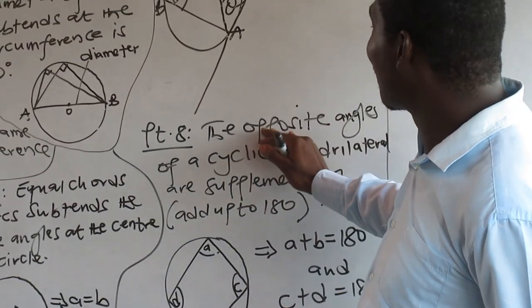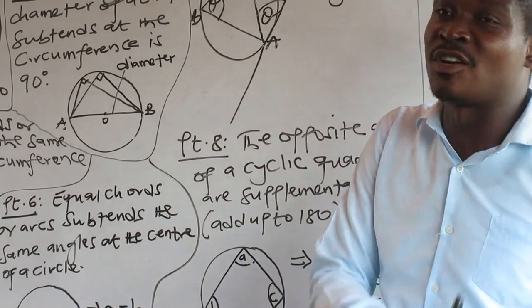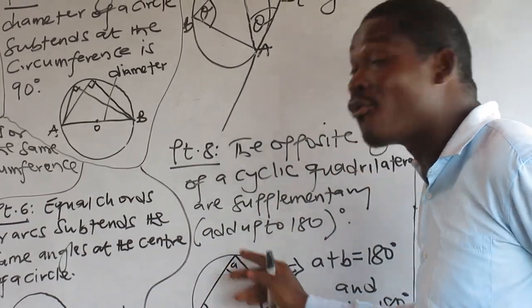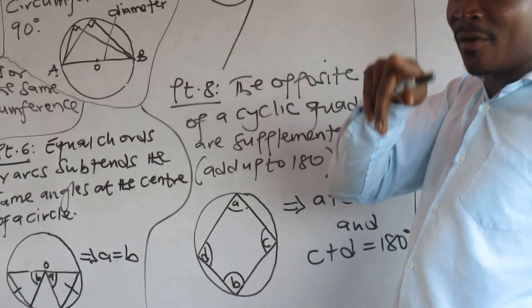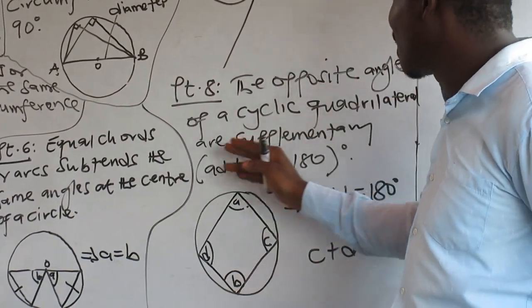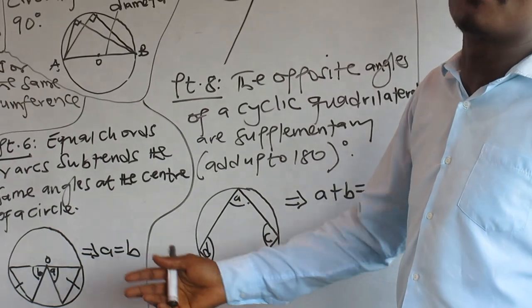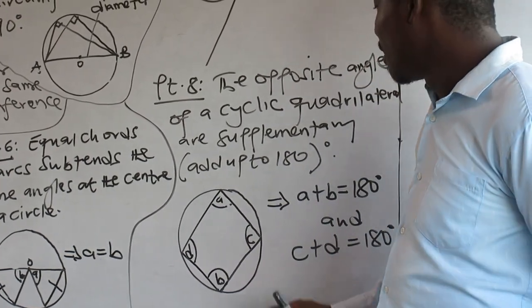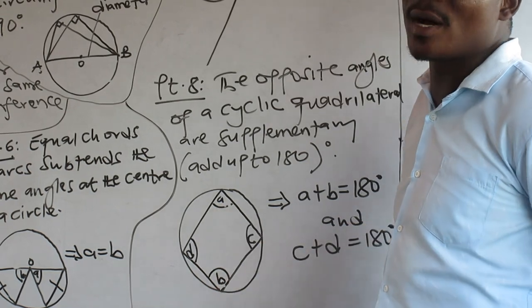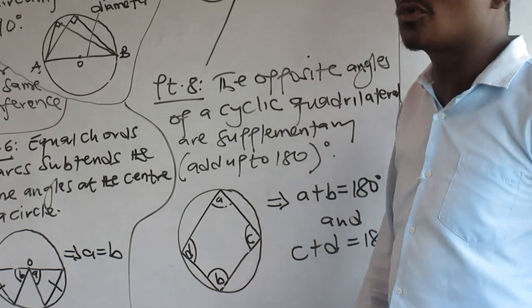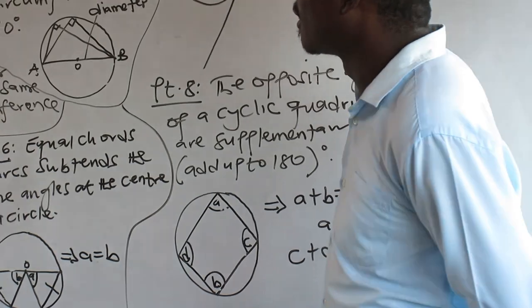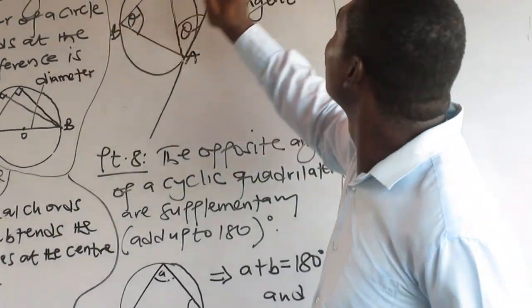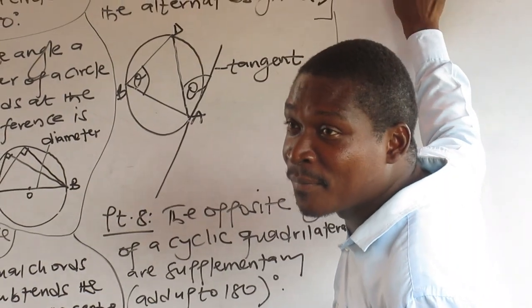Property eight (BT8): the opposite angles of a cyclic quadrilateral are supplementary — they add up to 180°. A cyclic quadrilateral has four sides with all vertices on the circle. So angle D plus Z equals 180°, and angle C plus D equals 180°. These are all the theorems you need to keep.